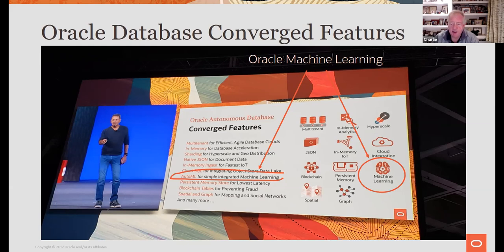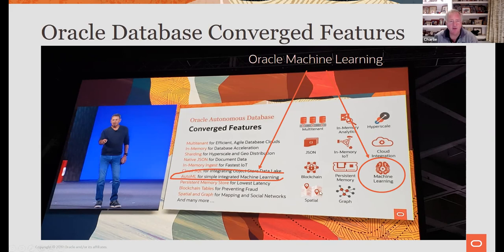You don't need a specialized product for in-memory, for JSON handling, for machine learning, or whatever — it's all part of the same platform. When you buy into that concept, it makes so much sense. You can also see spatial, graph, and machine learning at the bottom — these three things that were always sort of techno-niche, priced at $23,000 per processor.